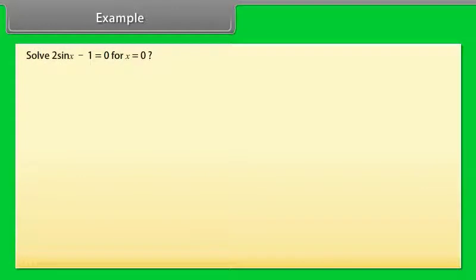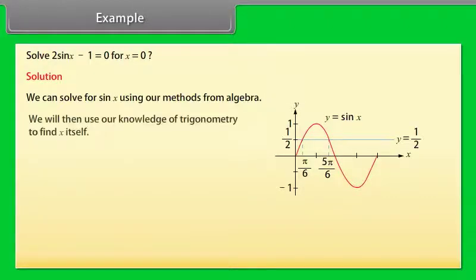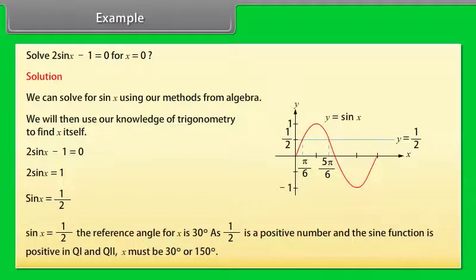Example: Solve 2sin x − 1 = 0. Solution: Solving algebraically, 2sin x = 1, so sin x = 1/2. The reference angle for x is 30 degrees. Since 1/2 is positive and the sine function is positive in quadrants 1 and 2, x must be 30 degrees or 150 degrees.